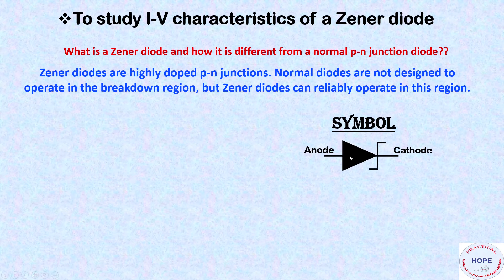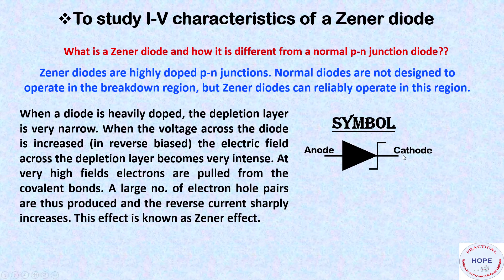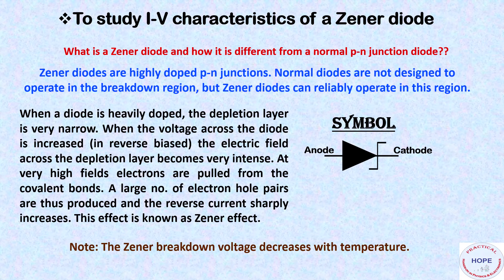This is the symbol for Zener diode. This is the anode and it is the cathode. Now when a Zener diode is heavily doped, the depletion layer is very narrow. When the voltage across the diode is increased in reverse bias, the electric field across the depletion layer becomes very intense. At very high fields, electrons are pulled out from the covalent bonds. Thus a large number of electron hole pairs are produced and the reverse current sharply increases. This effect is called Zener effect or Zener breakdown.